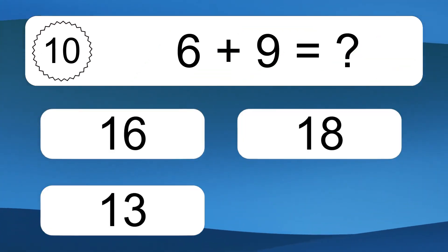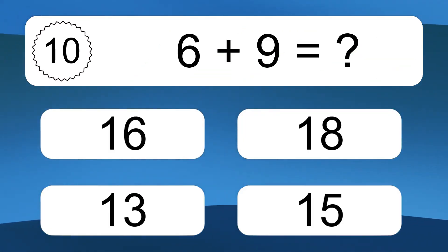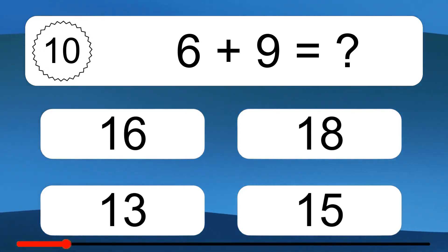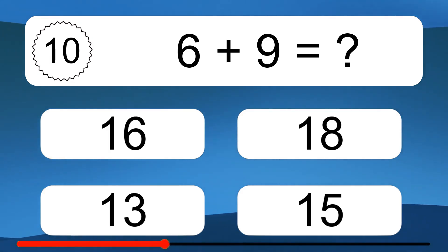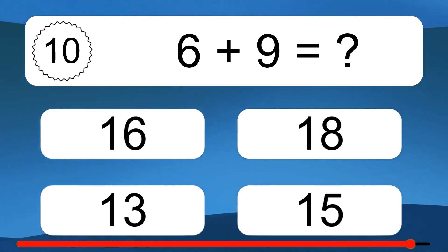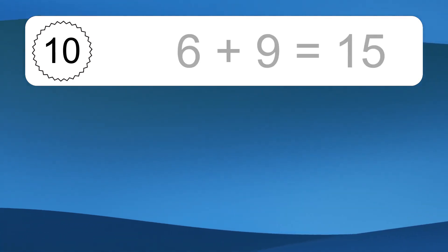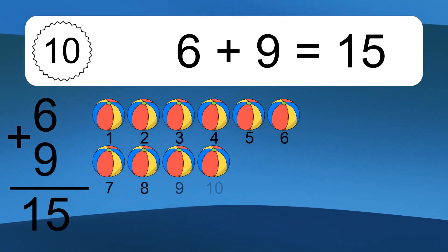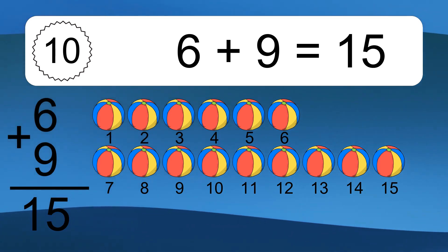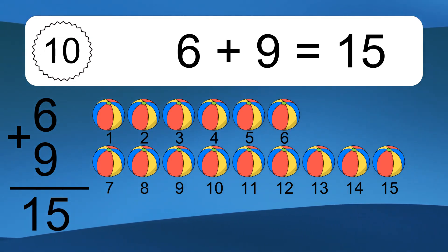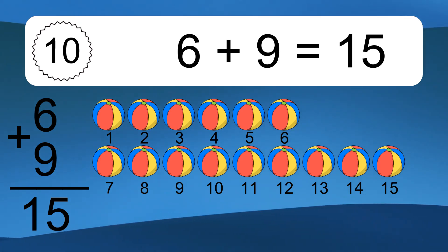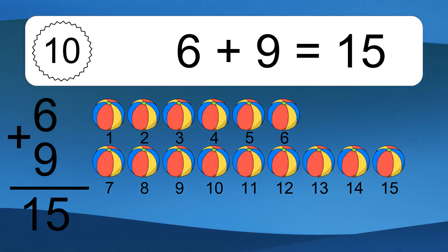6 plus 9 equals what? 6 plus 9 equals 15. Let's count it. 1, 2, 3, 4, 5, 6, 7, 8, 9, 10, 11, 12, 13, 14, 15.